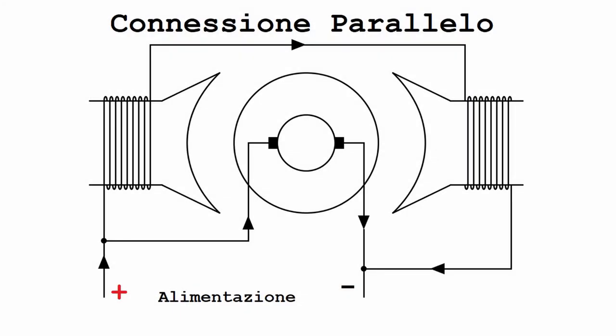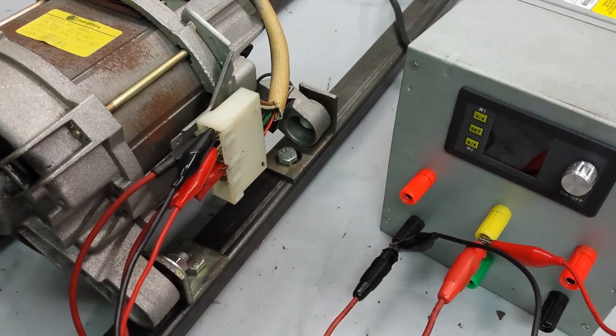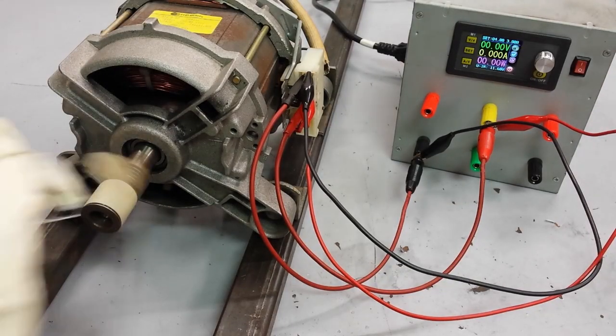But what happens if I power the rotor and the stator in parallel with 12 volts? The motor now is in parallel excitation configuration and I cannot keep it in place by my hand.